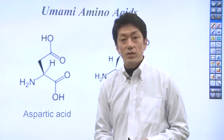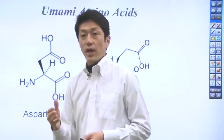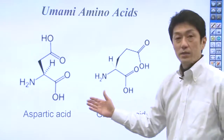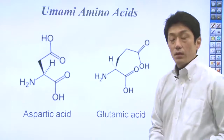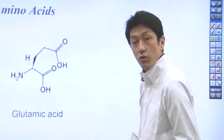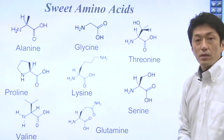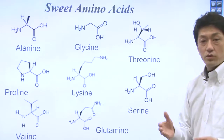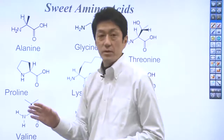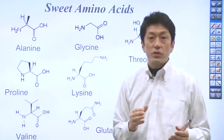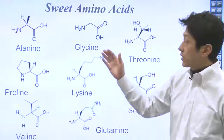The amino acids taste differently. As I mentioned earlier, glutamic acid and aspartic acid are umami amino acids. There are also sweet amino acids. Other amino acids are usually bitter. The level of sweetness or bitterness differs even within the same category.